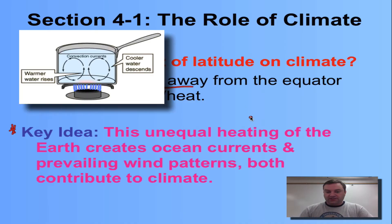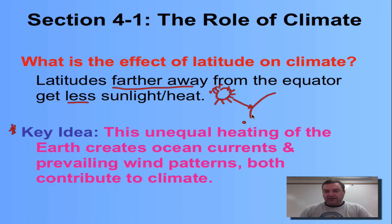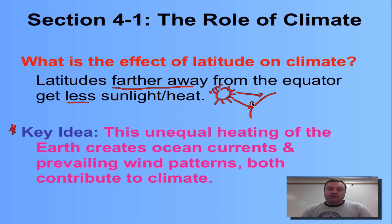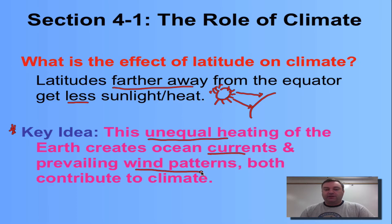Remember the earth is a sphere, so if the sun is over here, it's going to be straight down right about here, but at higher latitudes the angle is going to be less, and that's going to equal less heat. That's what creates this unequal heating. Unequal heating leads to ocean currents and prevailing wind patterns.